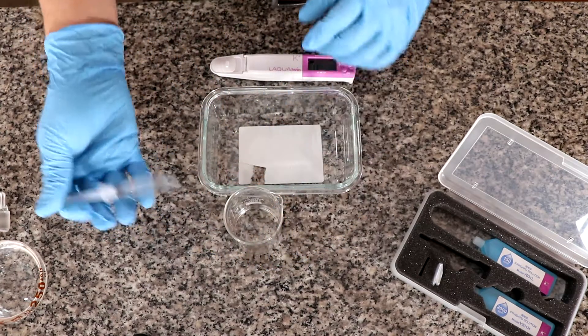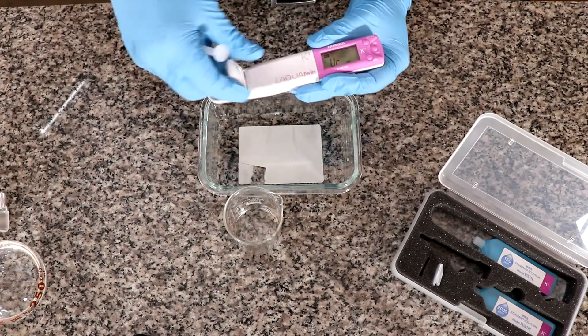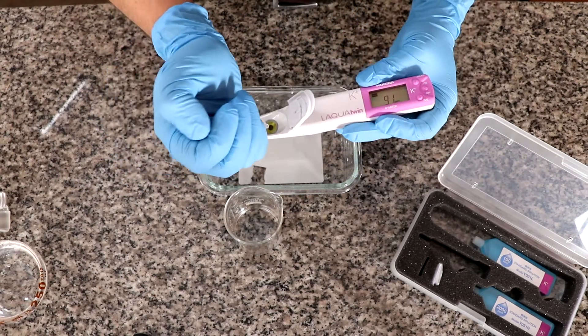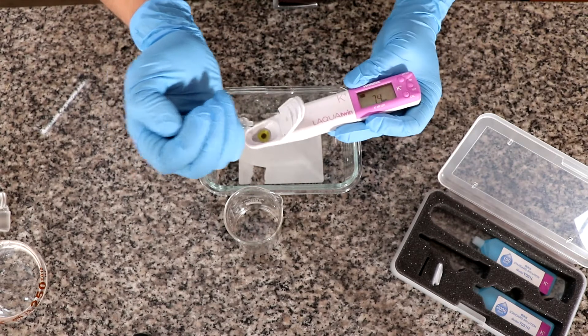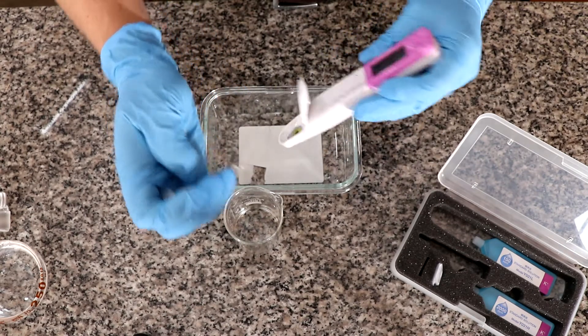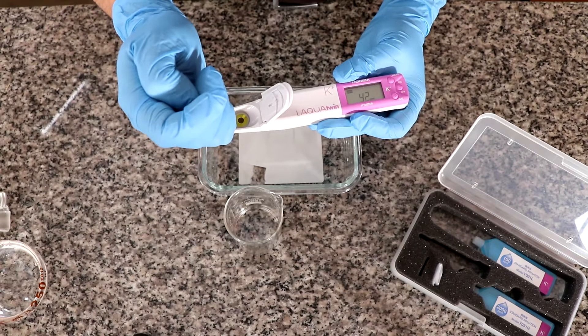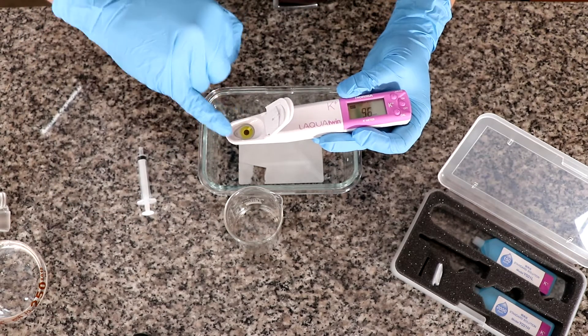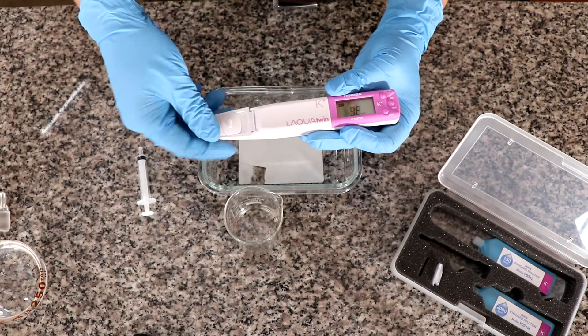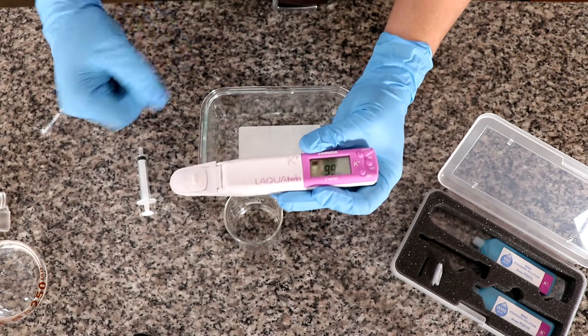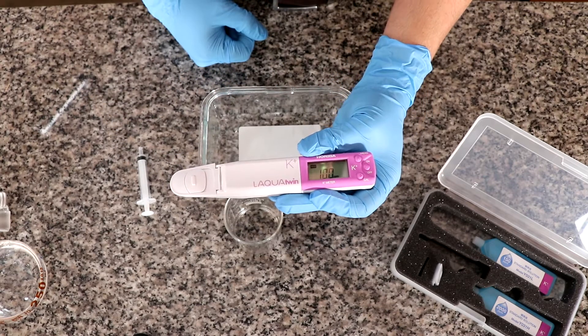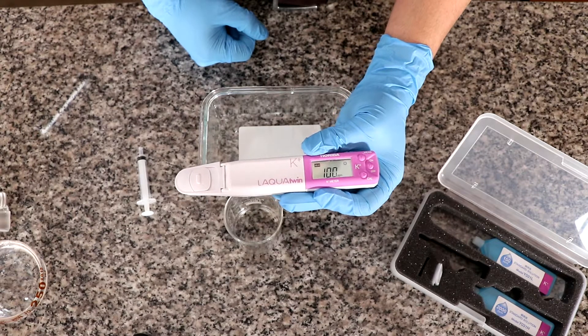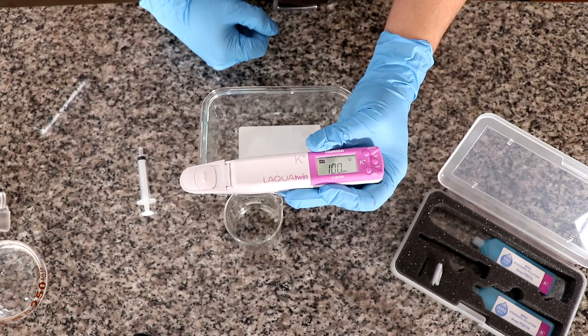Now using the solution, I am going to do the same thing that we did with the calibration solution, where I'm going to dump three times. And then this is the one. Make sure you fully cover the area of the sensor. Now we should wait. This is telling us we have 100 ppm of potassium.